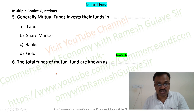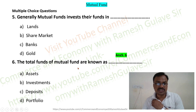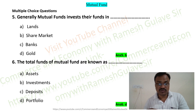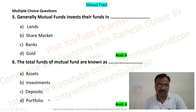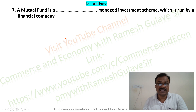The next question says: the total funds of a mutual fund are known as — and the options are assets, investments, deposits, and portfolio. The total funds held by a mutual fund company are basically known as portfolio. Another term now used is AUM, that is Assets Under Management. Traditionally the word portfolio was used; now it is AUM. So the answer is portfolio, and the full form of AUM — Assets Under Management — can also be asked.